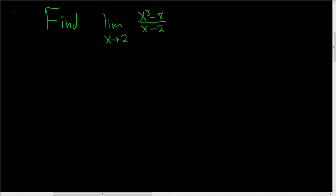So the problem is if we plug in 2 right away, we end up with 8 minus 8 over 2 minus 2, which is 0 over 0. And that's undefined.